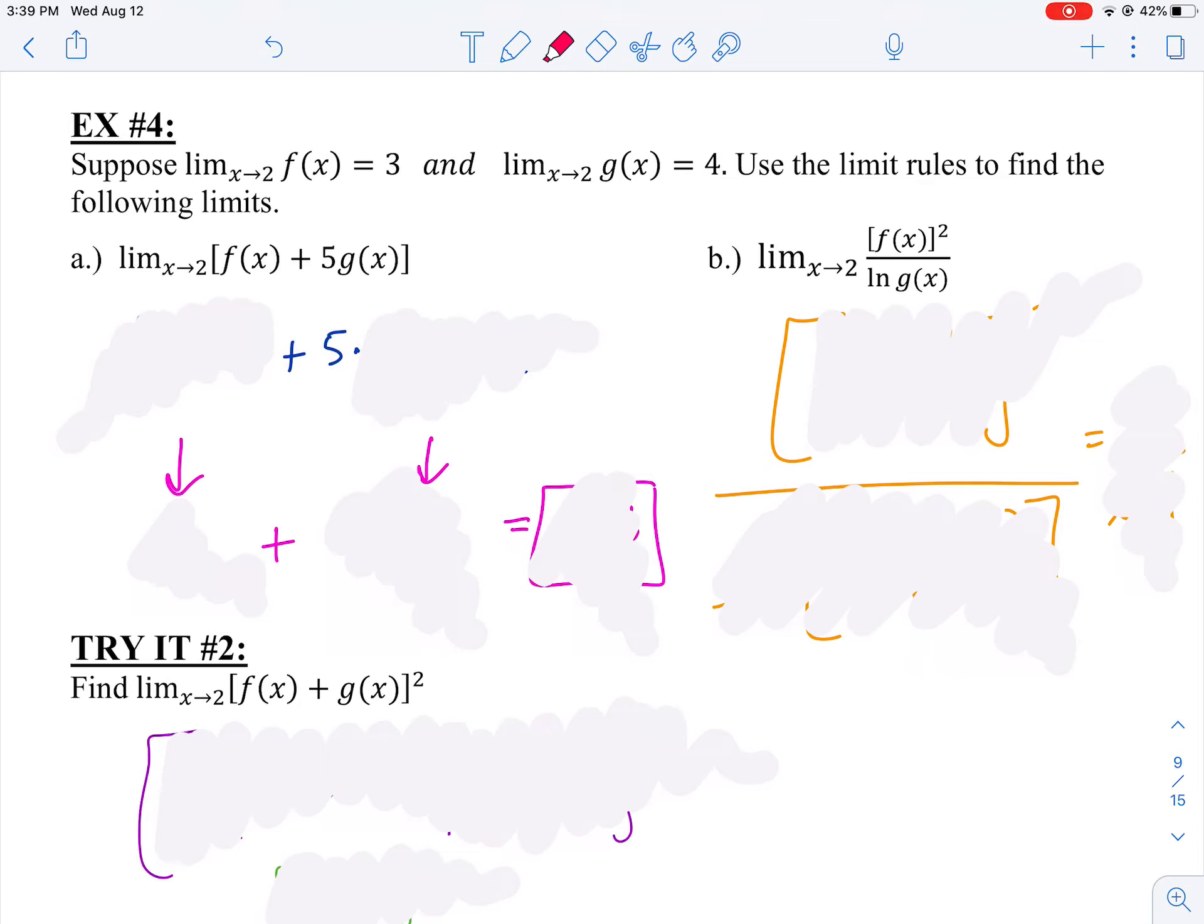So for A, it asks us to evaluate the limit as X approaches two of F(X) plus five times G(X). That's a whole bunch of stuff going on. We need to take G(X), multiply it by five, add it to F(X), and then apply the limit. And I don't even know what F(X) or G(X) is.